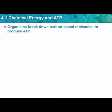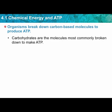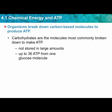Organisms break down carbon-based molecules to produce ATP. Carbohydrates are the molecules most commonly broken down to make ATP. ATP is not stored in large amounts because it breaks down quickly — if unused, it just breaks back down into ADP, giving off waste heat. You can get up to 36 molecules of ATP from one glucose molecule.